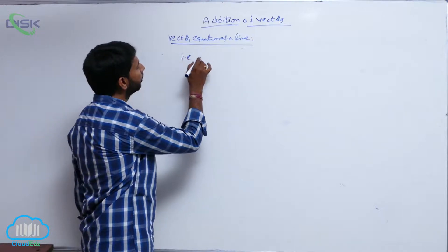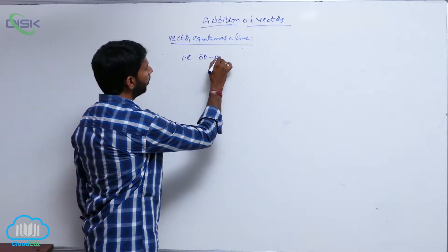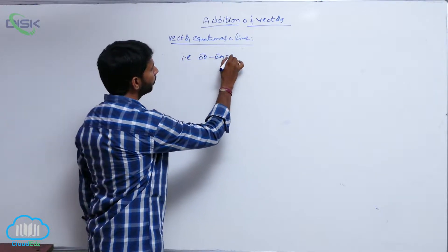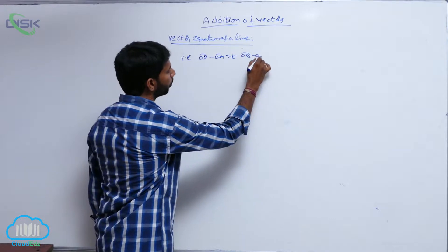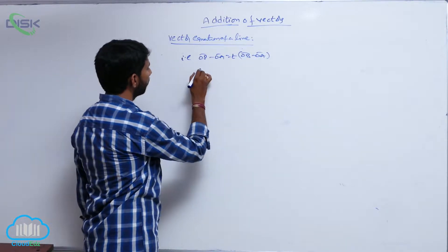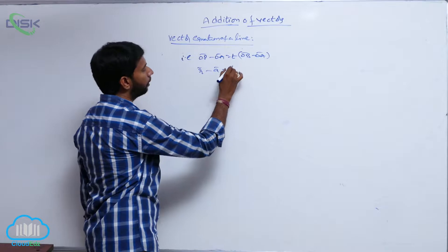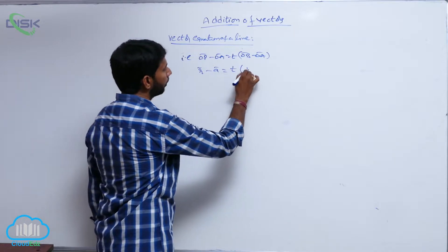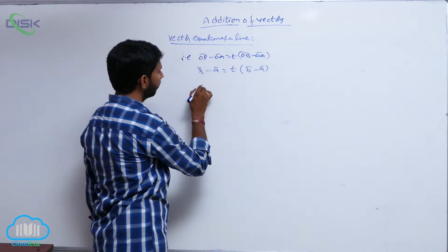That is, OP̄ minus OĀ is equal to t of (OB̄ minus OĀ), that is R̄ minus Ā is equal to t of (B̄ minus Ā).